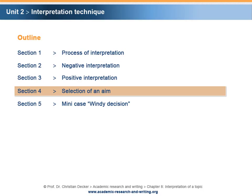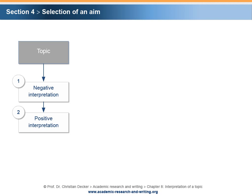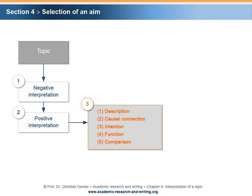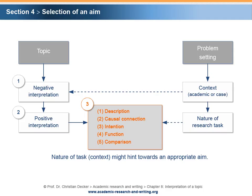Section 4 – Selection of a name. As already explained, there are three process steps in order to derive an interpretation of a topic: negative interpretation, positive interpretation, and finally the selection of a name. However, the decision on an aim can be a challenging task, especially if more than one aim is possible. In a situation where the problem setting is known, an analysis of the context might be helpful. The context of the problem setting can be purely academic or linked to a practical problem. It helps to identify the nature of the research task, thereby narrowing the options down to those aims which serve the research purpose best.